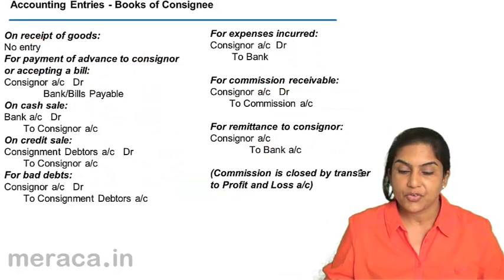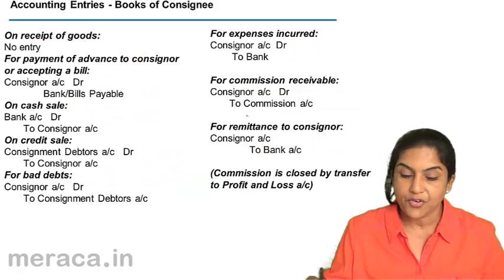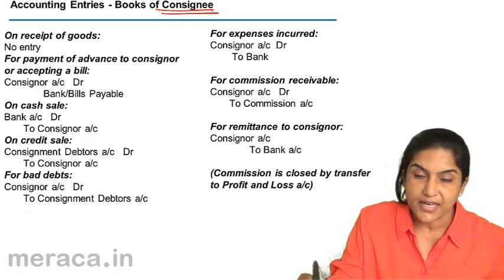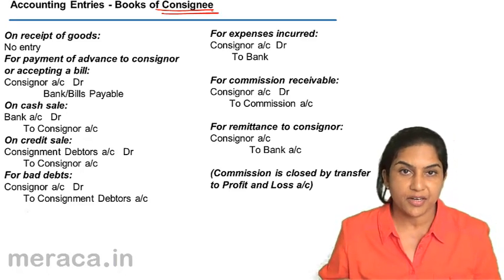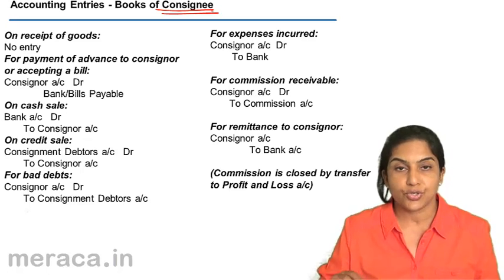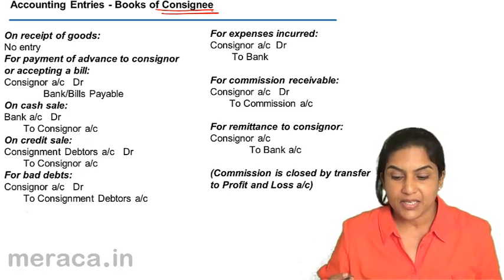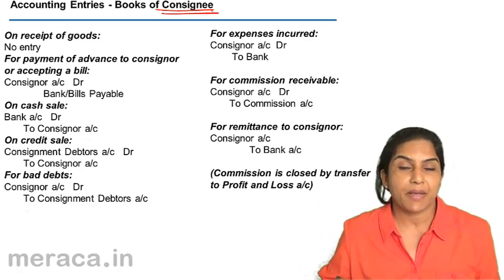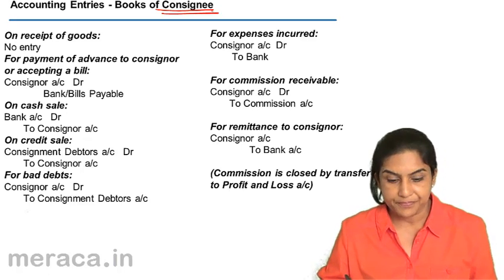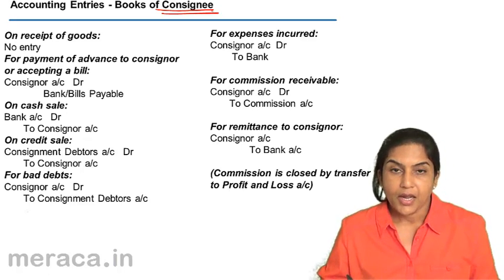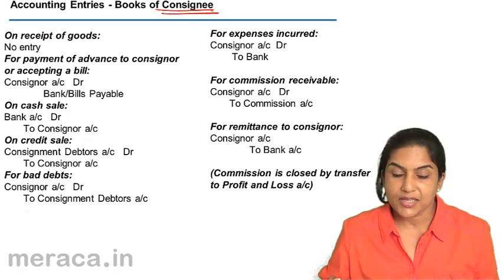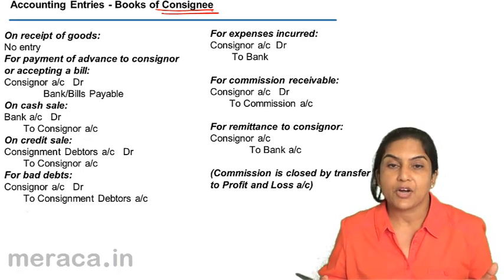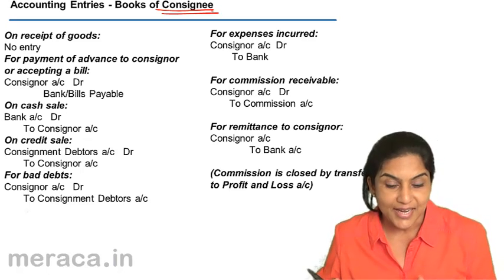Let us do a quick revision — a neater presentation of the accounting entries in the books of the consignee. Kanta receives the goods; what entry does Kanta pass? No entry — the goods do not belong to her. If Kanta pays any advance to Mukta, the entry Kanta passes is Mukta's account debit to bank, or bills payable if Kanta accepts a bill. When Kanta makes sales, bank account debit — but this money belongs to Mukta — therefore bank account debit to Mukta's account, i.e., bank account debit to consigner account.